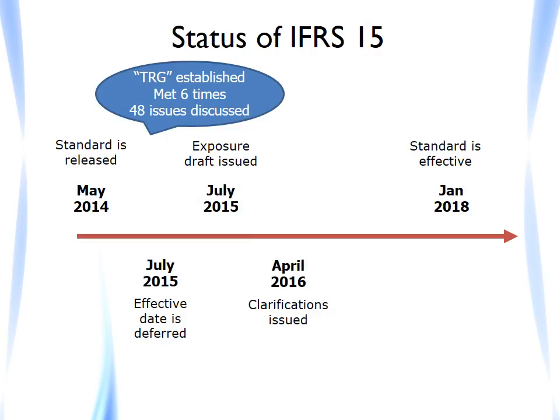In May 2014, the new revenue standard, IFRS 15, Revenue from Contracts with Customers, was released. The standard was a combined project of the IASB and the FASB. The initially effective date of the standard was for years starting on or after 1 January 2017. However, in July 2015, the effective date was deferred by a further 12 months and the standard is now effective for years starting on or after 1 January 2018.